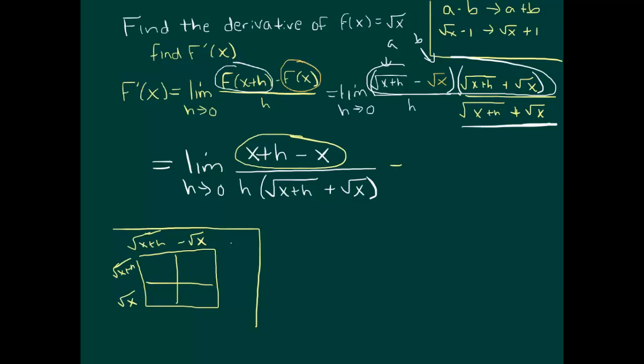So I'll leave that to you. So the top now becomes x minus x is 0, and then you're only left with an h at the top, and h divided by h is a 1. So now I'm left with 1 over square root of x plus h plus square root of x.